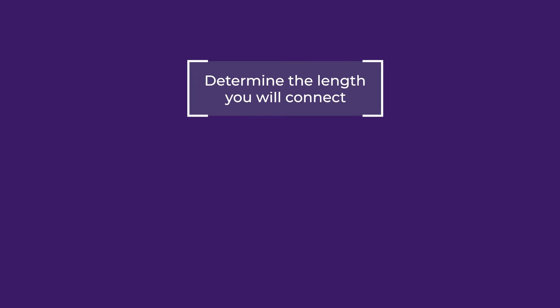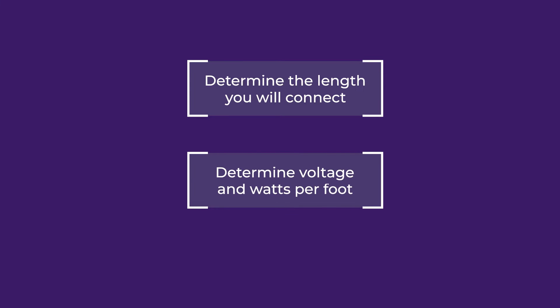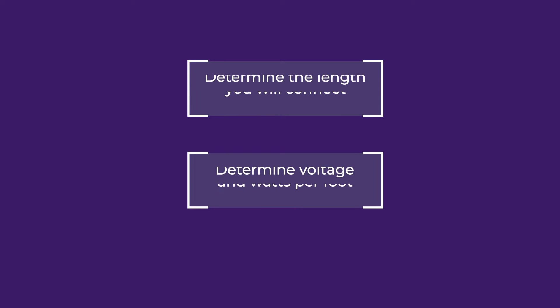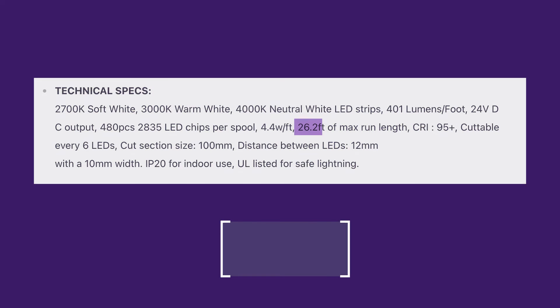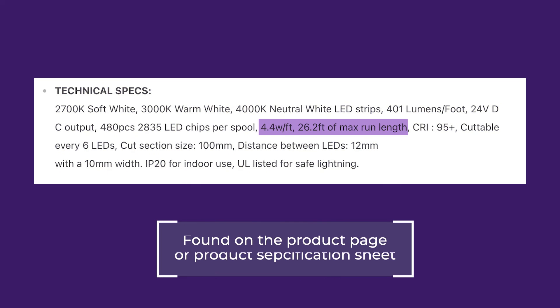First, determine the length of LED strip you will connect to a power supply. Then determine the voltage and watts per foot for the LED strip. This can be found on the product page or on the specification sheet that comes with the product.